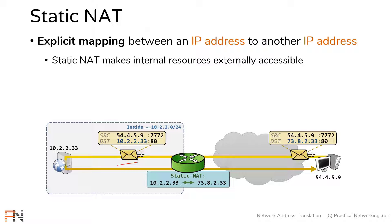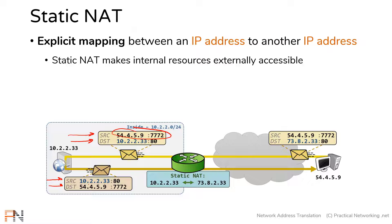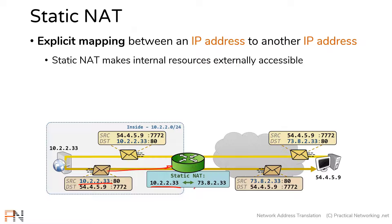When this packet then hits my internal resource, my internal resource will respond. When a response packet is generated, essentially the source and destination fields are reversed — what was the source is now the destination, and what was the destination is now the source. On the way out, when this packet crosses my router, the router will detect the IP address in the static NAT configuration and translate that source IP address accordingly. Notice again, only the IP address information was modified, confirming that this is indeed a NAT.